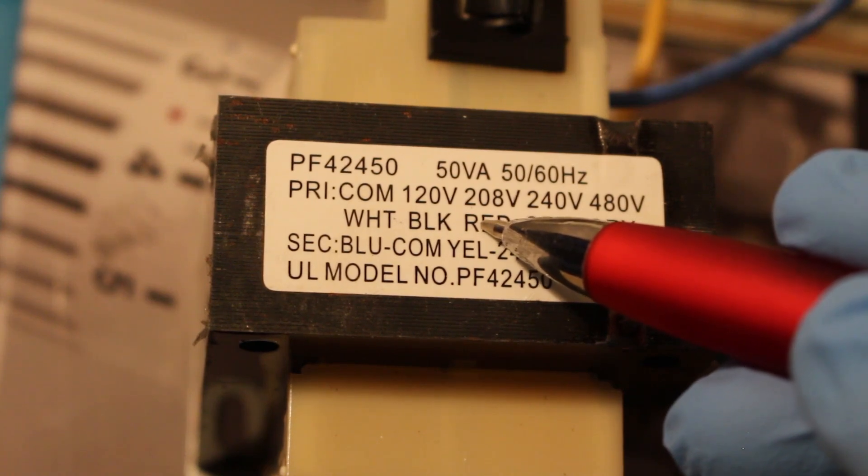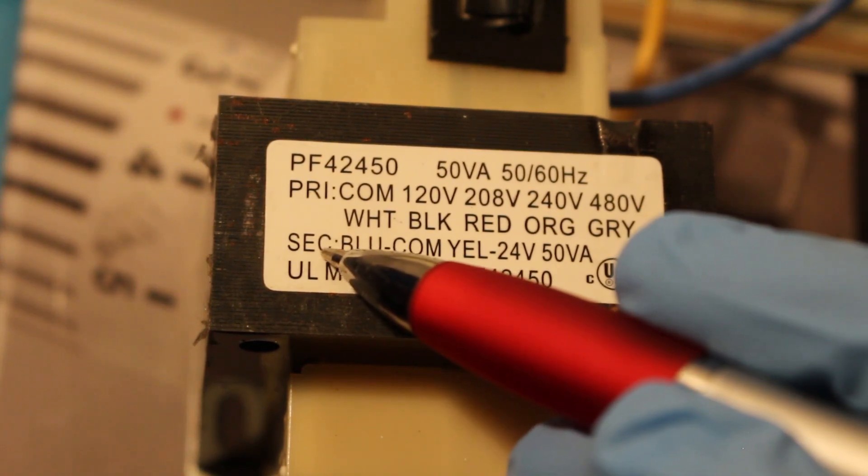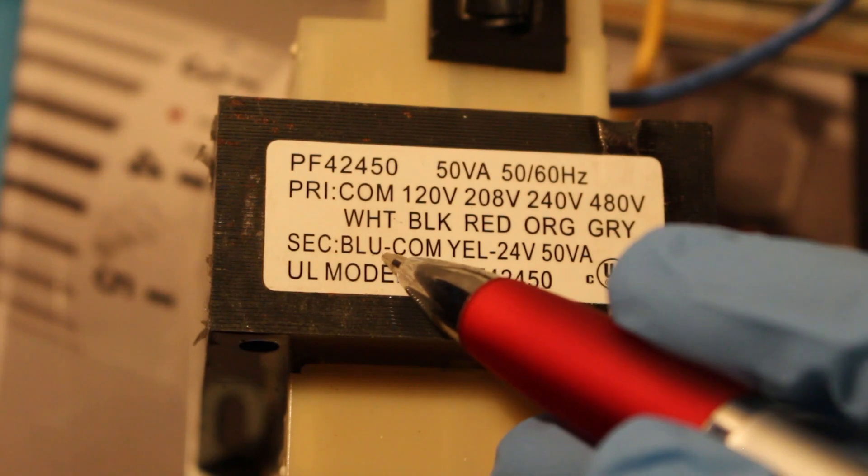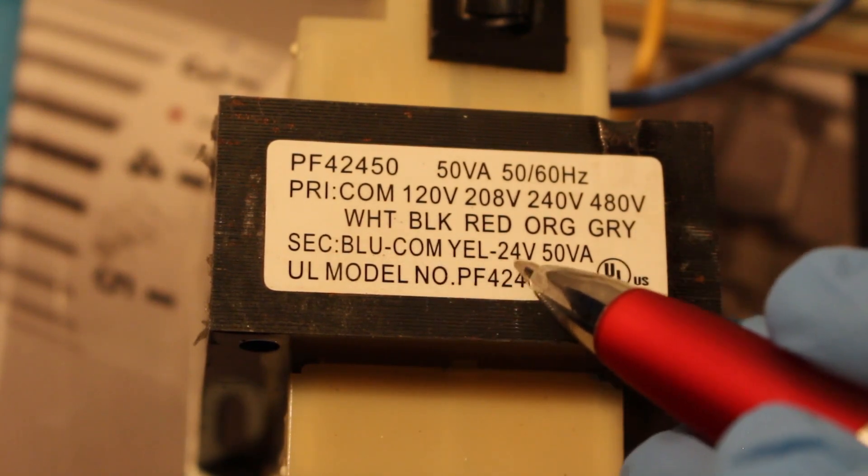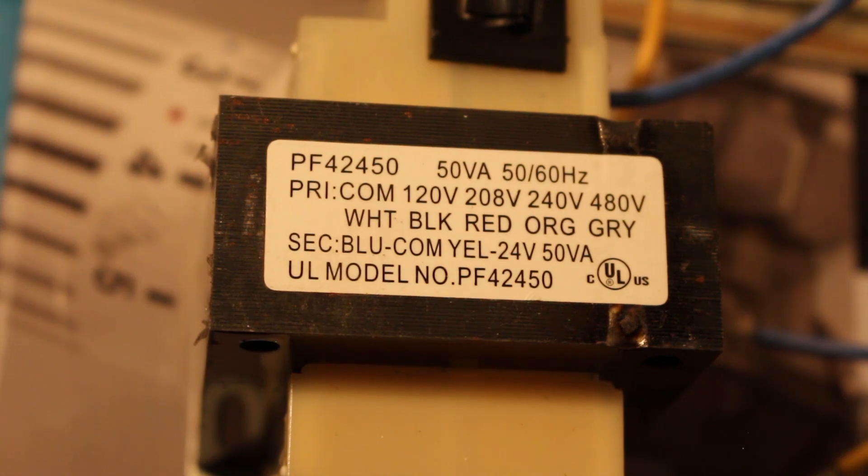So you would connect your white and red to your power source, and there's your incoming power for your primary coil. And automatically your secondary output will be 24 volts, which is the blue common wire and yellow which is your 24 volts. That is how you would wire this and this is how it works.